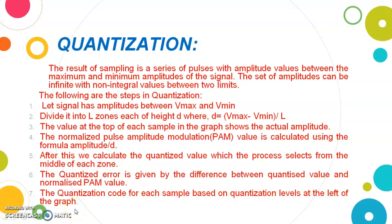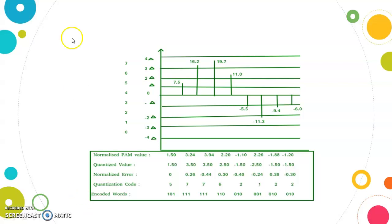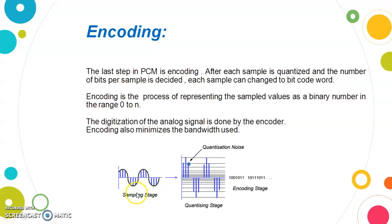Looking at the graph, we first calculate the normalized PAM value, then the quantized value, then we have error values representing the difference from the original to the gathered value. Then we assign a quantized code to each sample. After quantization, we perform encoding.